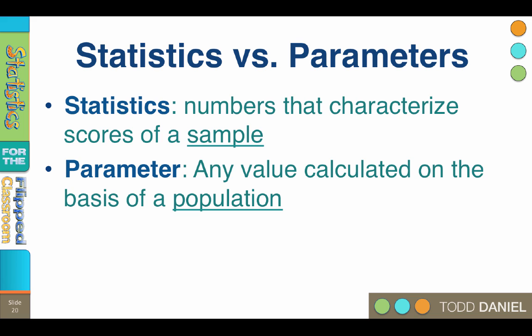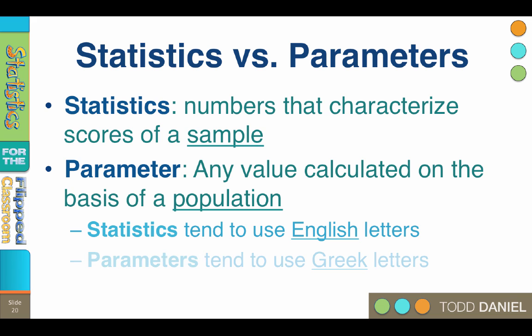In order to be clear whether we are talking about statistics or parameters, we use different letters to describe them. Statistics tend to use English letters M and SD for mean and standard deviation. Parameters tend to use Greek letters like sigma, mu, psi, or lambda. So the mean of the sample would be M, but the mean of the population would be mu.